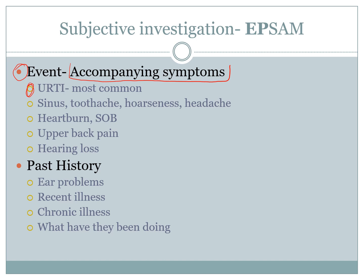We can also look for sinus pain, chronic rhinosinusitis, toothaches, dental problems, and headaches — these can all give secondary reasons. Heartburn can be indicative of a GIT problem. Shortness of breath can denote lung issues. Upper back pain can point to C2 and C3 problems. Accompanying hearing loss should also be noted, and if the patient does have hearing loss, you need to pursue specific objective investigations.